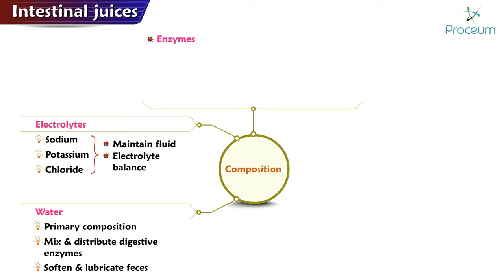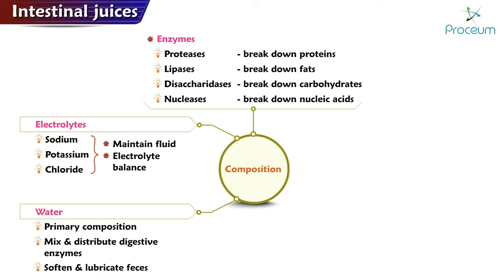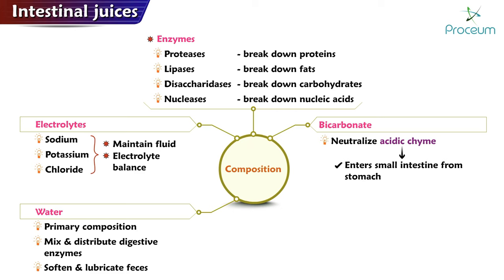Intestinal juices contain various digestive enzymes, including proteases, which break down proteins, and lipases, which break down fats. They also contain disaccharidases, which break down carbohydrates, and nucleases, which break down nucleic acids. Additionally, intestinal juices contain bicarbonate, which helps to neutralize the acidic chyme that enters the small intestine from the stomach.